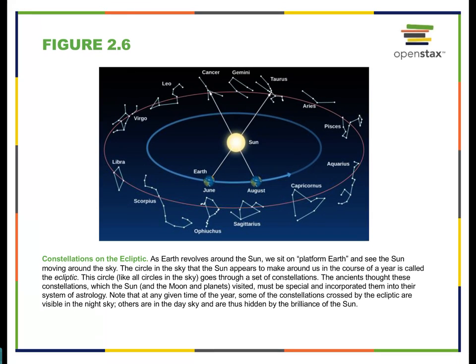Moving on to the idea of constellations and the ecliptic. When you look up at your local sky, the sun will move through it because the Earth is rotating, causing the sun to appear to rise and set every night, just as stars appear to rise and set. The ecliptic is a line on the celestial sphere that neither matches the celestial equator nor passes through the celestial poles — it's a tilted circle that overlays the sphere.